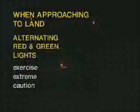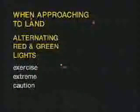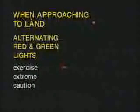If you're in the air and you see an alternating light — alternating between red and green — it means exercise extreme caution. Do what you were going to do, but very, very carefully.